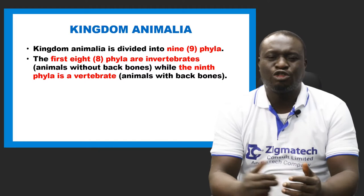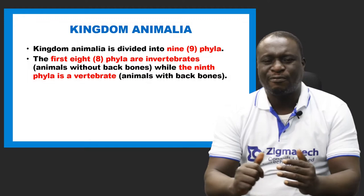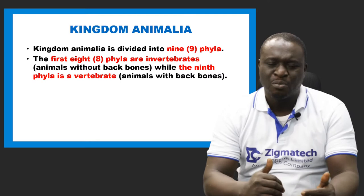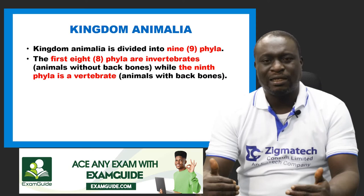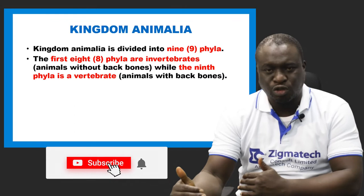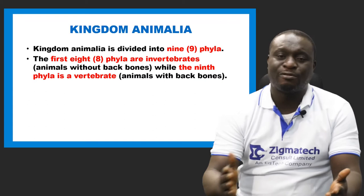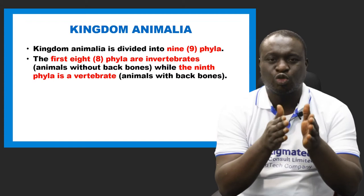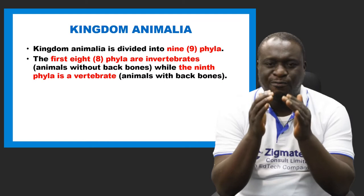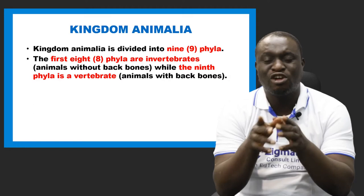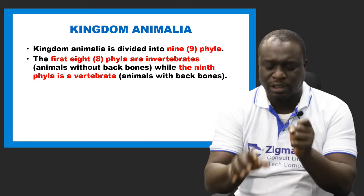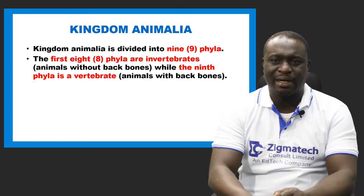Kingdom Animalia is divided into nine major phyla. The first eight of these phyla are referred to as invertebrates — animals that do not have backbones. Vertebrates are animals with backbones. So animals are divided into two: vertebrates and invertebrates. The first eight phyla in kingdom Animalia are all invertebrates, and the ninth one, which is the last phylum, is referred to as a vertebrate — it has a backbone.